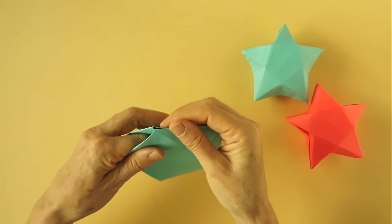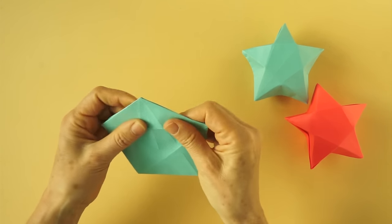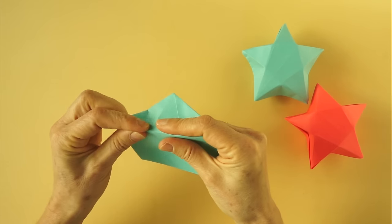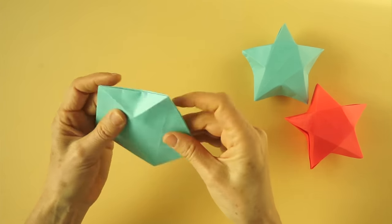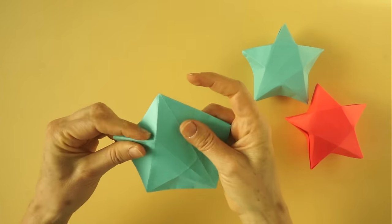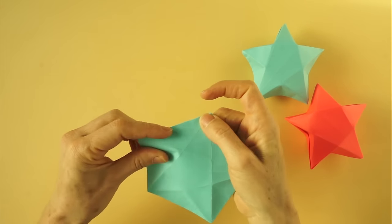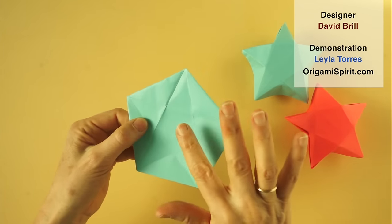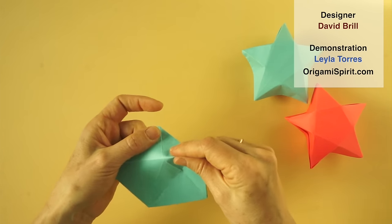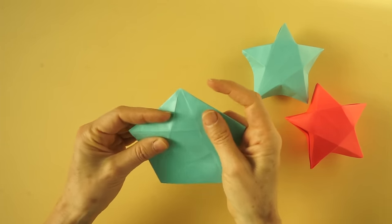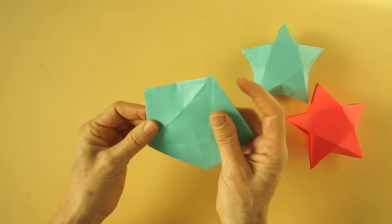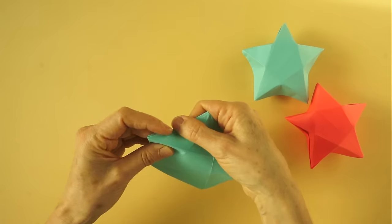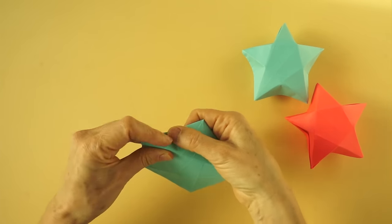This side is the opening of the box. We are going to reinforce these folds, pressing lightly. On this side too. Back and forth, lightly.